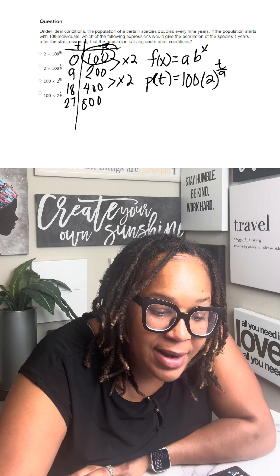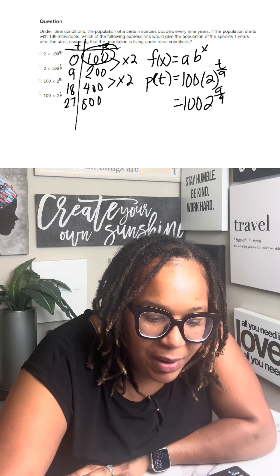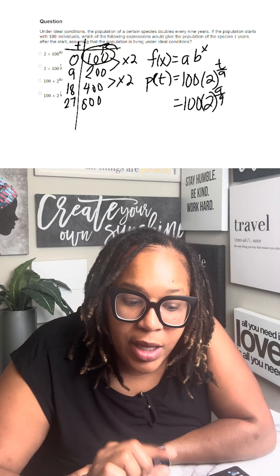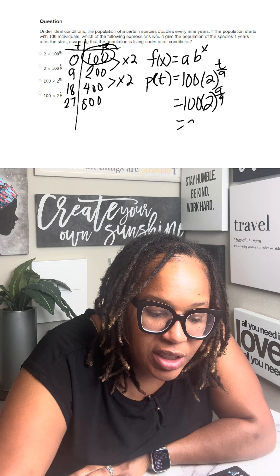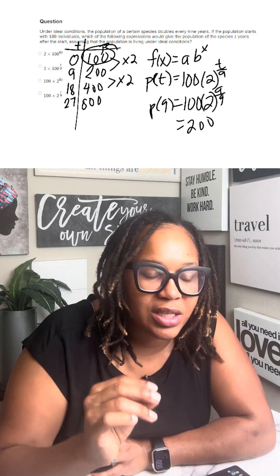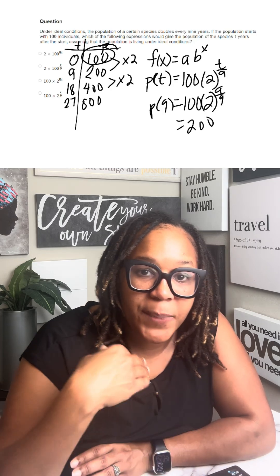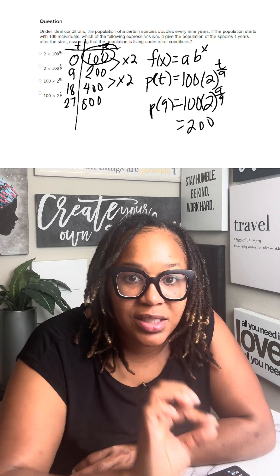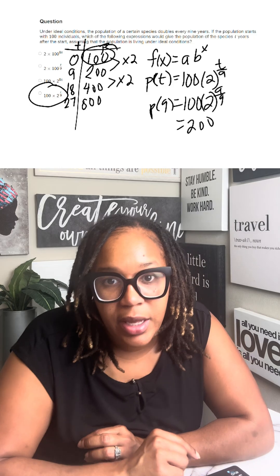But when I plug in nine, let's see what happens. I get two to the nine divided by nine. Nine divided by nine is one, two to the first is two, two times 100 is 200. So that would be P(9). That's how you could check it — is it nine times T or is it T divided by nine? So your final answer will be T divided by nine.